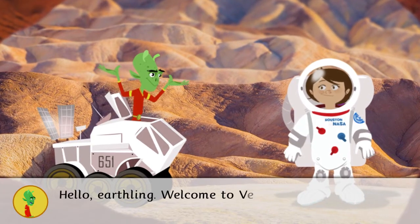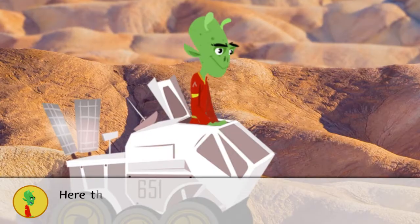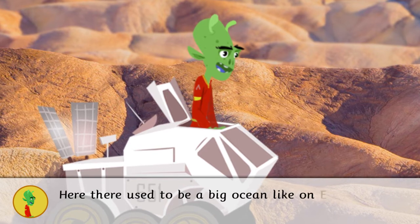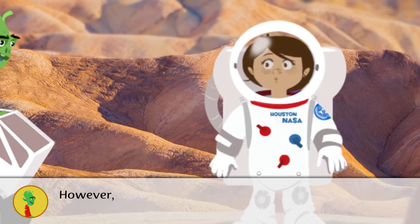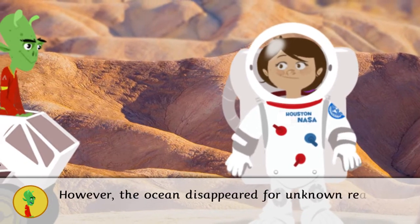Hello Earthling, welcome to Venus. Here there used to be a big ocean like on Earth and because of that it is possible that there was life. However, the ocean disappeared for unknown reasons.